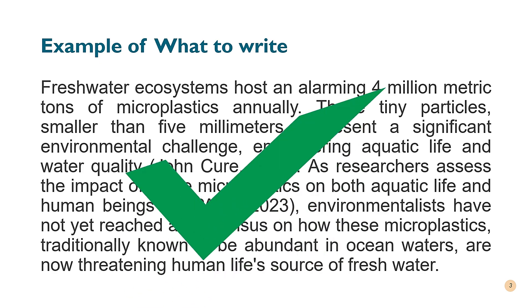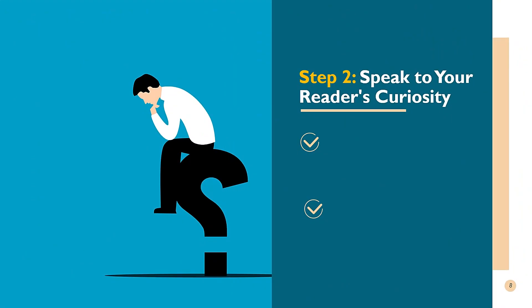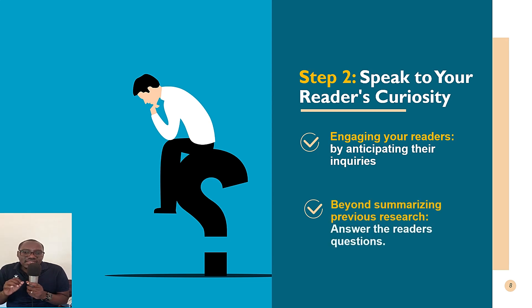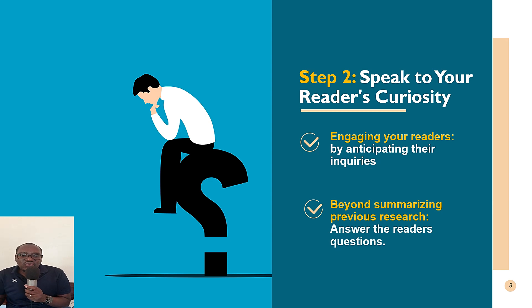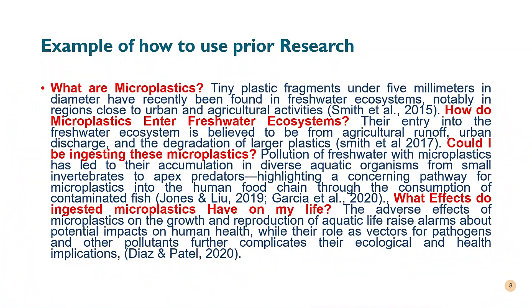Step number two: in order to continue engaging the reader, you need to anticipate the reader's questions and address them right off the bat. This means that instead of simply summarizing the literature, use it to answer the reader's questions and you will keep the reader engaged. Let's look at an example of how we can use previous literature to keep the reader engaged.